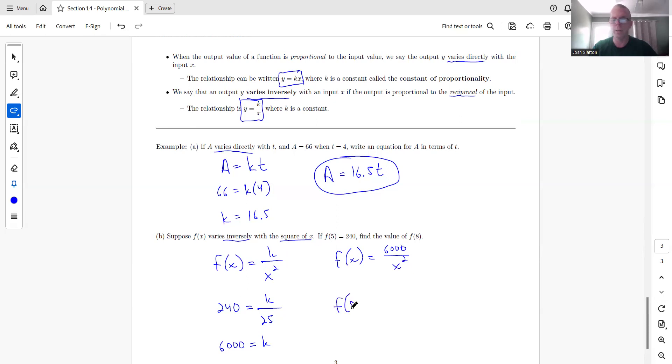So F of X is 6,000 over X squared. And so we need to find F of 8. So we're just going to plug in 8 for X. And we get 93.75. So these are very basic, very simple. Just kind of pay attention to the, I mean, these words will be pretty explicitly given.